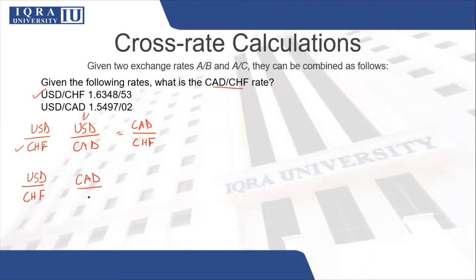You need to take the reciprocal so that CAD goes up and USD comes down. Once you have done this, you will get the CAD to CHF rate. Because if you multiply both rates, USD and USD will cancel out, giving you CAD over CHF.